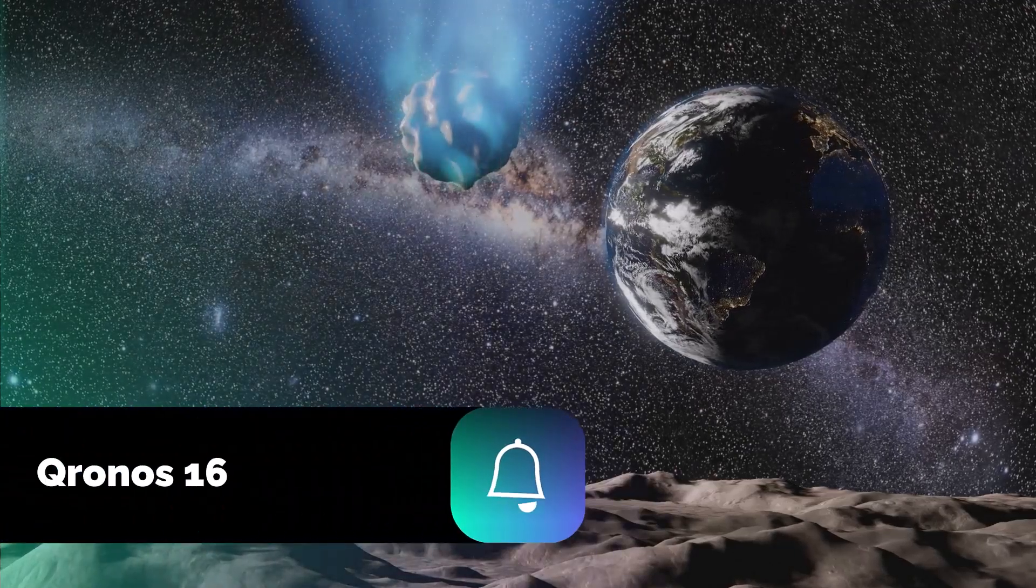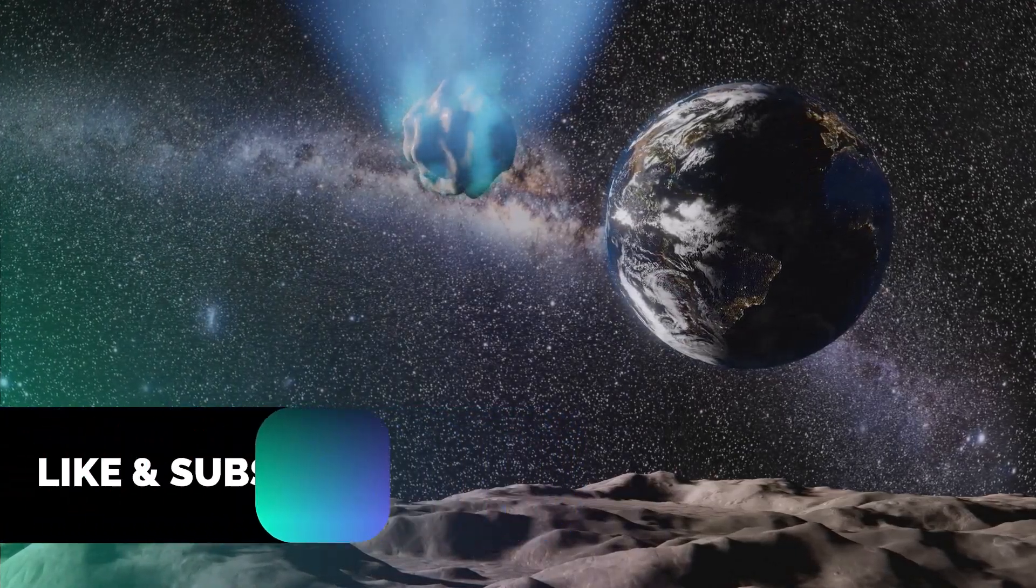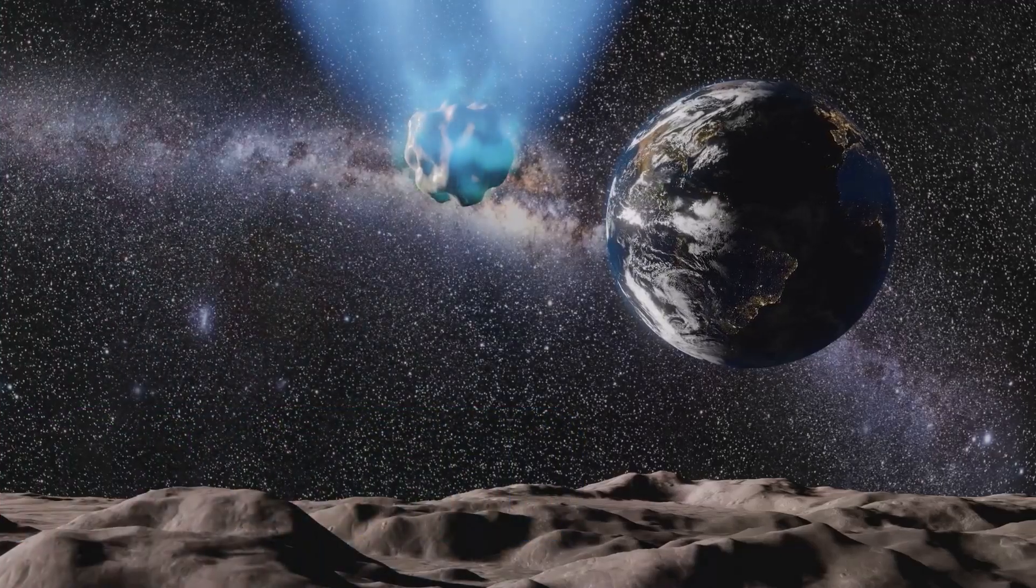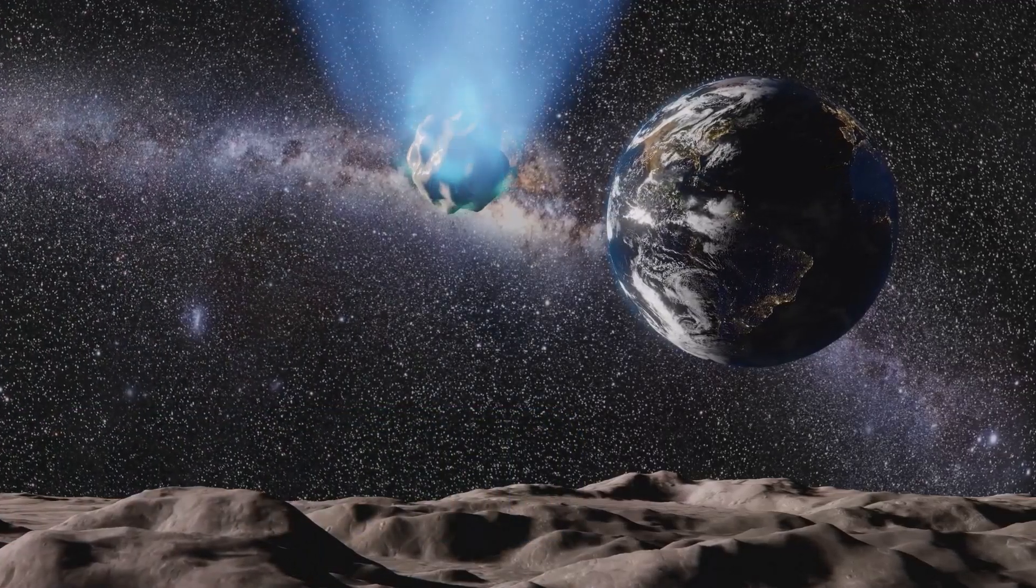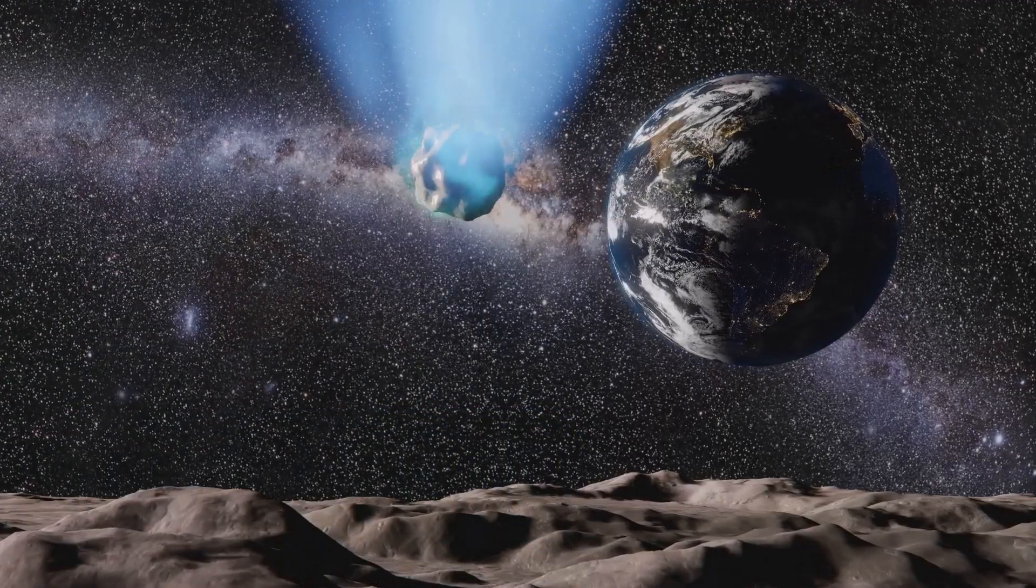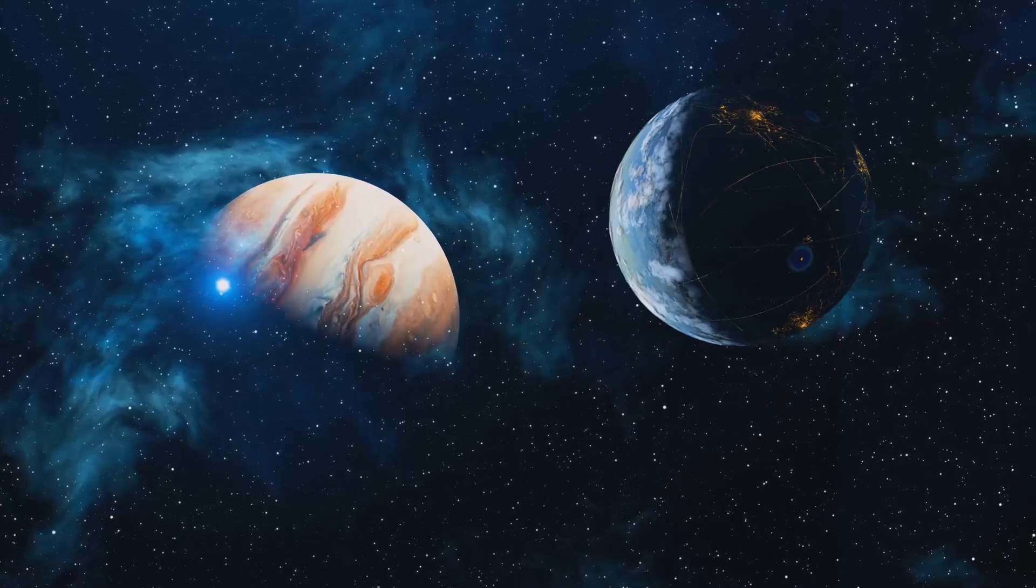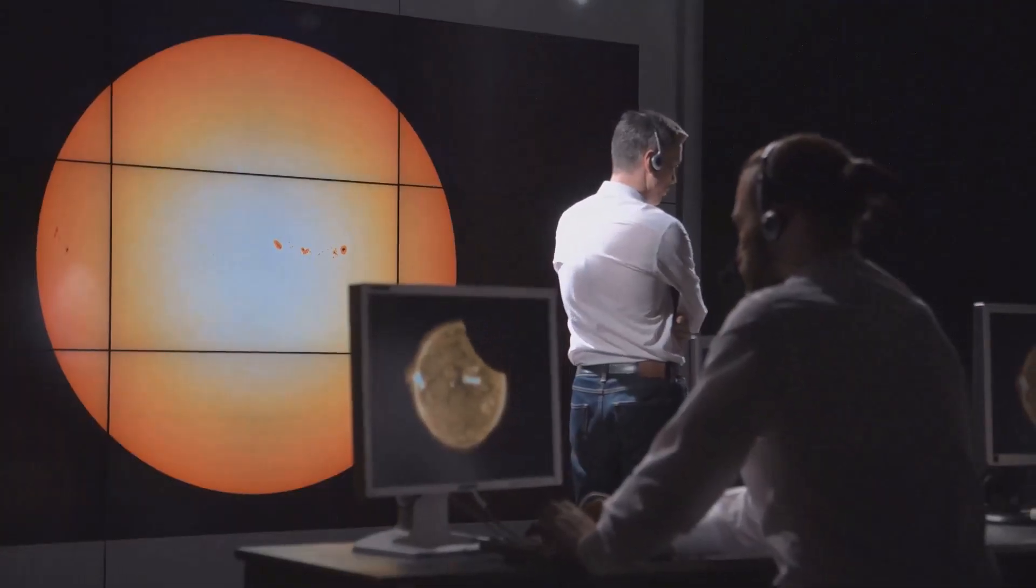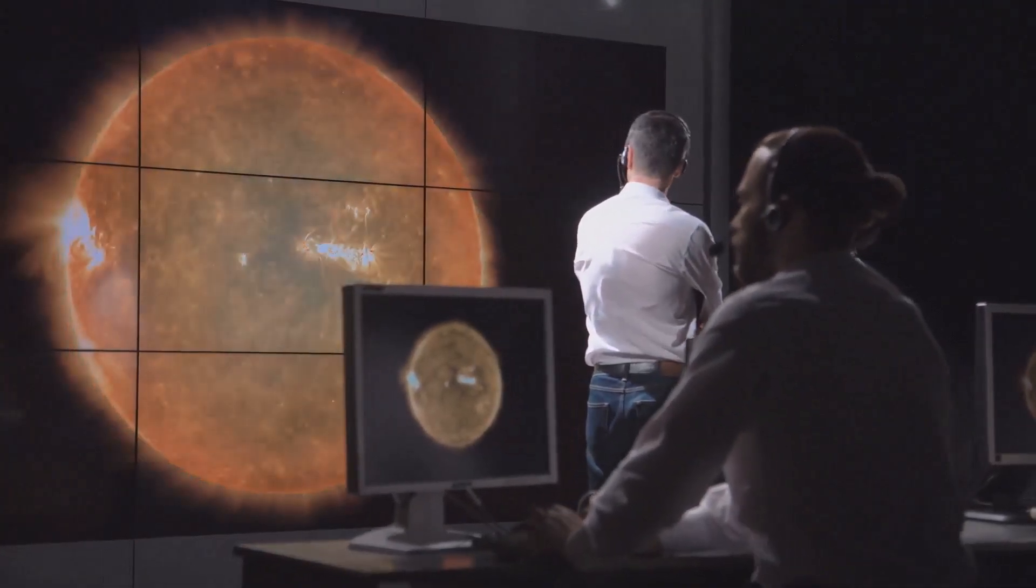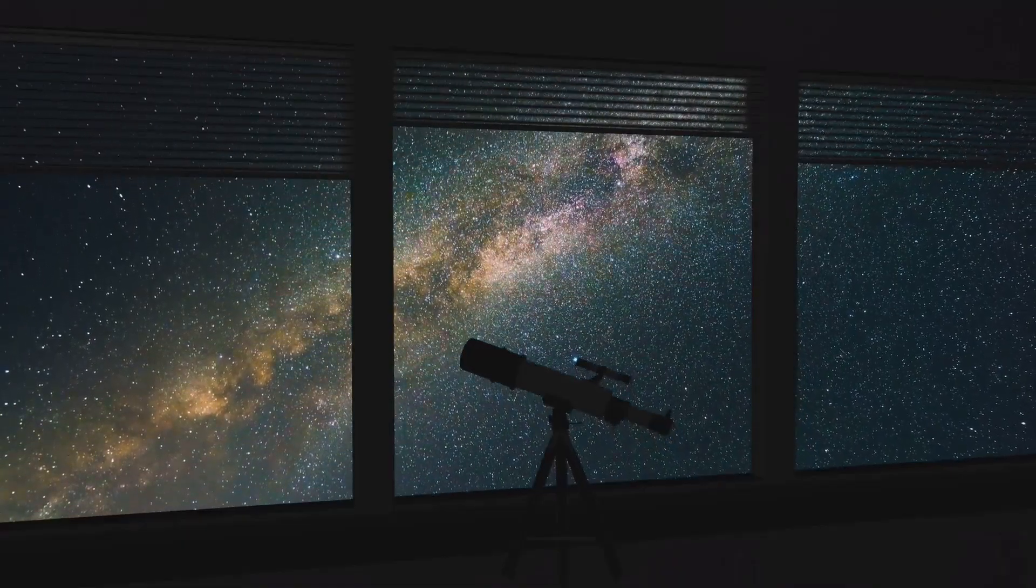Some scientists believe it could trigger waves of comets to crash into the inner solar system, setting off extinction-level events like the asteroid that ended the dinosaurs. Though the risk is remote, Planet Nine's influence may already be altering the orbits of distant objects. That's why astronomers around the globe are hunting it relentlessly, searching for a flicker of light in the darkness.